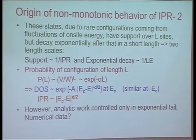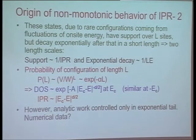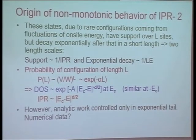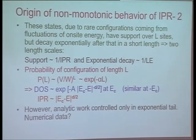These states, due to rare configurations coming from fluctuations of on-site energy, have support over L sites, but decay exponentially after that length. So there are two length scales in the problem: one is the support of the wave function, and another is the exponential decay beyond the support. The Lyapunov exponent finds the exponential decay, whereas the inverse participation ratio finds the support. These two lengths are diverging and diverge completely at the band edge.